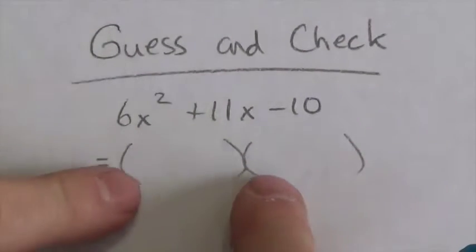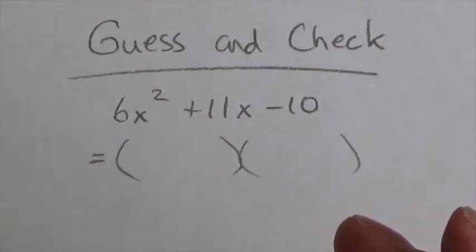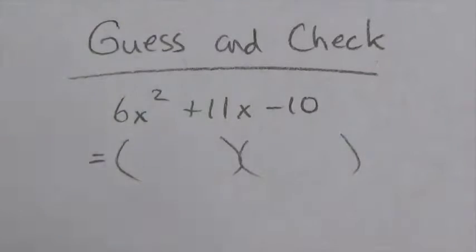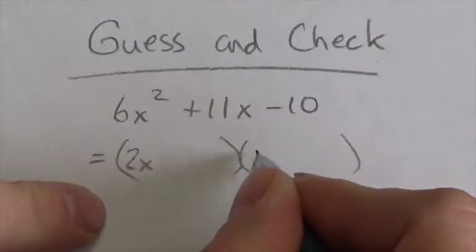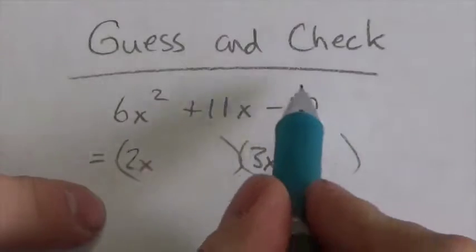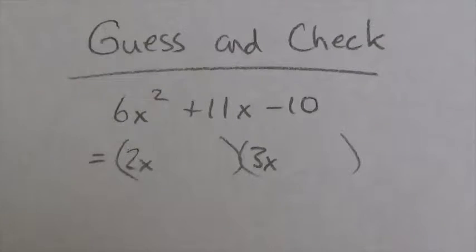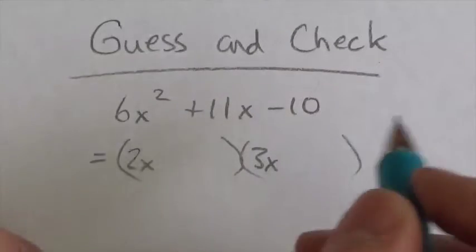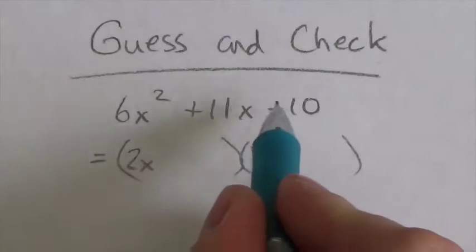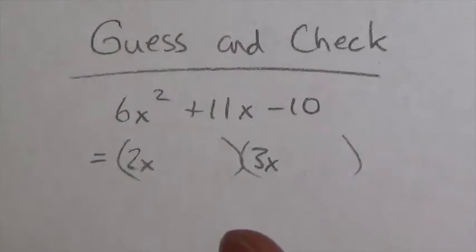I already know this is going to have two binomials multiplied together to get 6x squared plus 11x minus 10. Now, 6x squared could be broken down: 6 can be either 2 times 3 or 6 times 1. Let's guess the most common one — 2x times 3x. The last term, negative 10, can be broken down into either 2 times 5 or 10 times 1. Because the term is negative, one of those two factors is going to be negative, and the other positive.